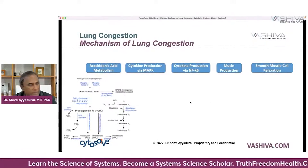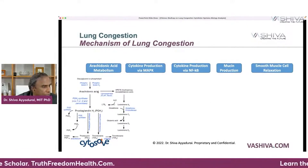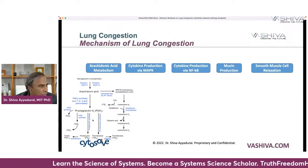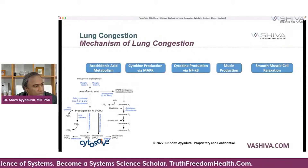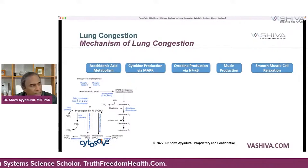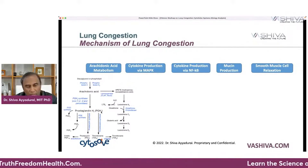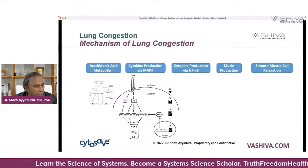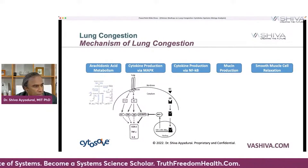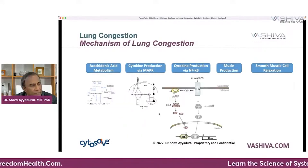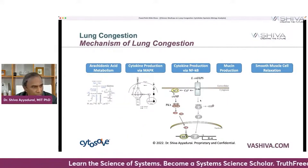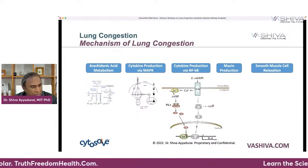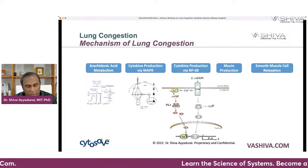In the arachidonic acid metabolism pathway, it gets metabolized through a series of steps to produce prostaglandin PGH2, and eventually PGE2 — that's where the inflammatory process takes place. For cytokine production, we're looking at IL-6, TNF-alpha, and COX-2, produced through the MAPK pathway. Another pathway through NF-kappa-beta crosses the nuclear membrane and also generates IL-6, another inflammatory cytokine.